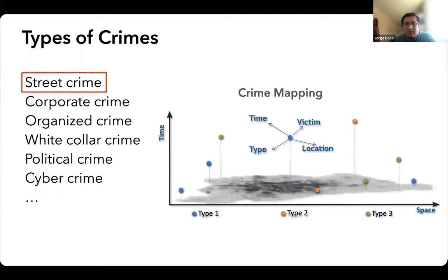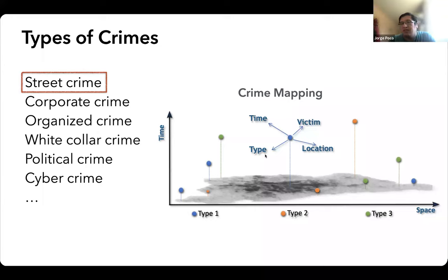One characteristic of this kind of crime is that it is a spatial-temporal event. Associated with each crime event, we have the location — basically the latitude and longitude coordinates — the time, and also a type, which can be robbery or a different kind of crime. There is also a victim, but we are not going to work with the victim in this case. We are only going to use these three elements: the type, the time, and the spatial location.